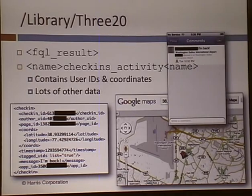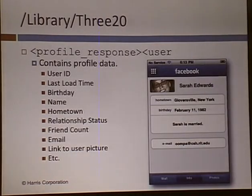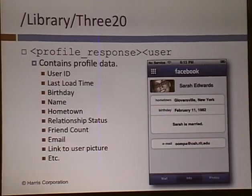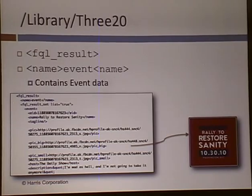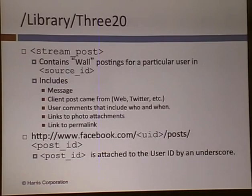The 320 directory, from what I understand, is an open source development library. I've seen it on a whole variety of different applications. It usually contains profile icons, XML album photos, and miscellaneous pictures. This is the check-ins activity — if you want location data, there's a lot of coordinates. This is from a friend of mine who just got into Dulles, so I'm able to track where he's at. FQL is Facebook Query Language.